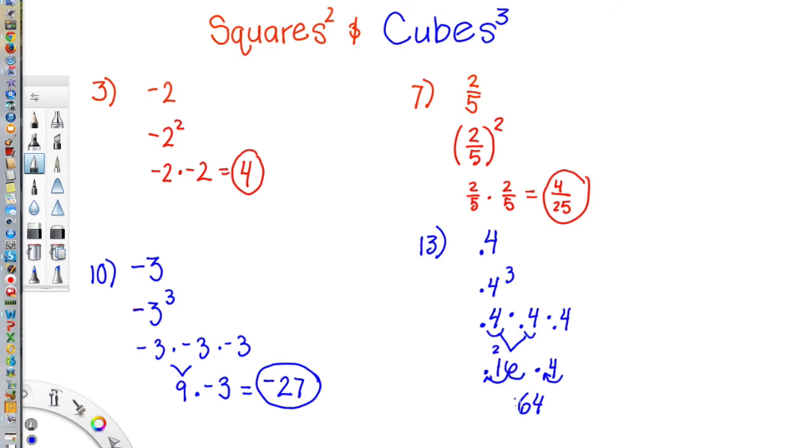So I need to move my decimal place, one, two, three places over, and in this empty spot, or place, I put a placeholder there, I have zero. So my answer is 64 thousandths. So four tenths to the third power, which is four tenths times four tenths times four tenths, will give me 64 thousandths.